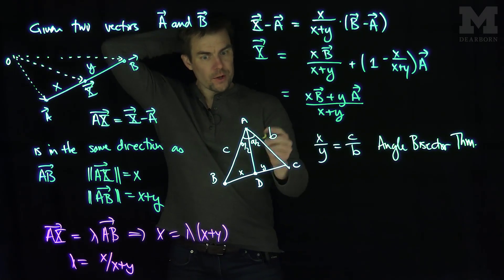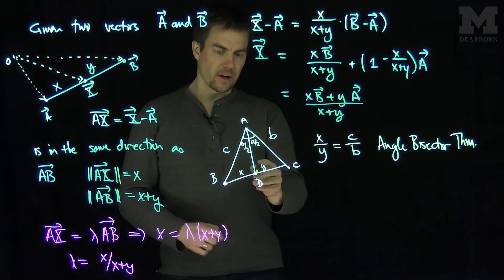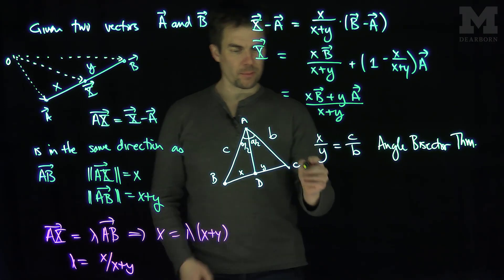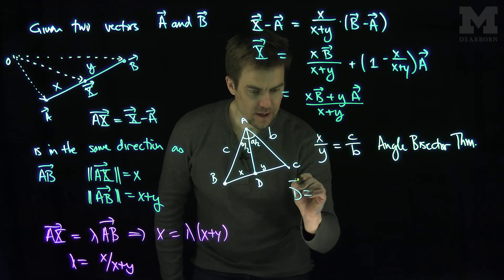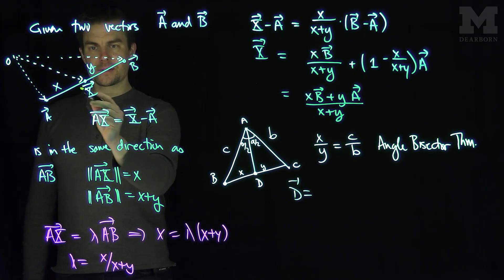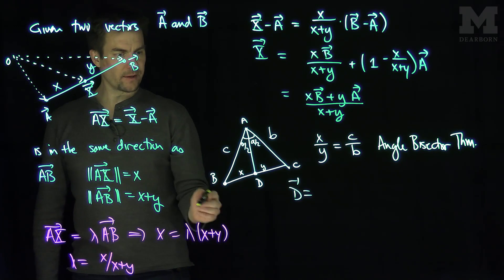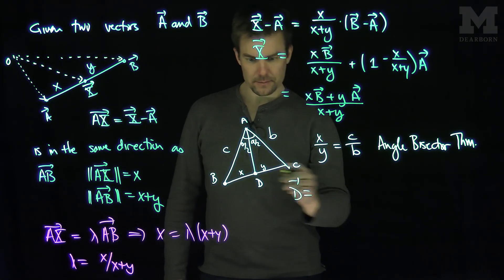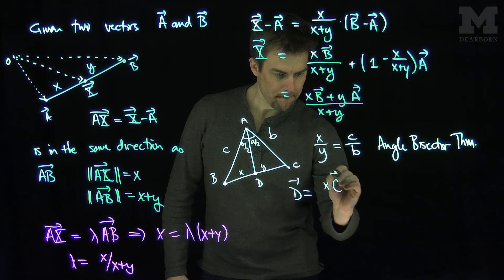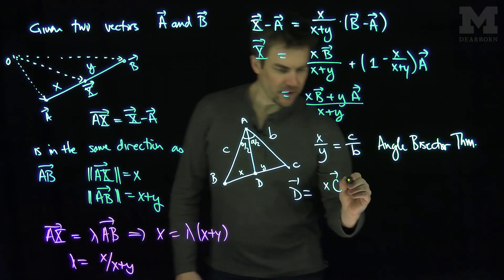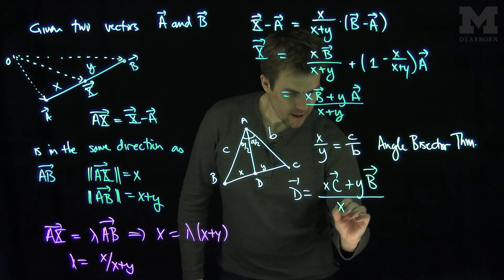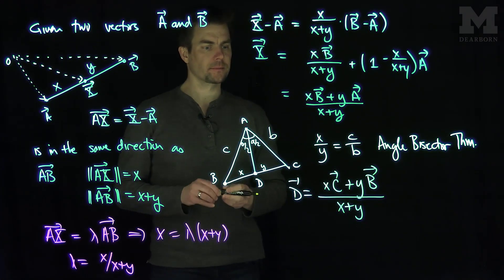From this, we can find the coordinates of D. D is a point on segment BC, so from our section formula, D as a vector will be x times vector C plus y times vector B, all divided by x plus y.